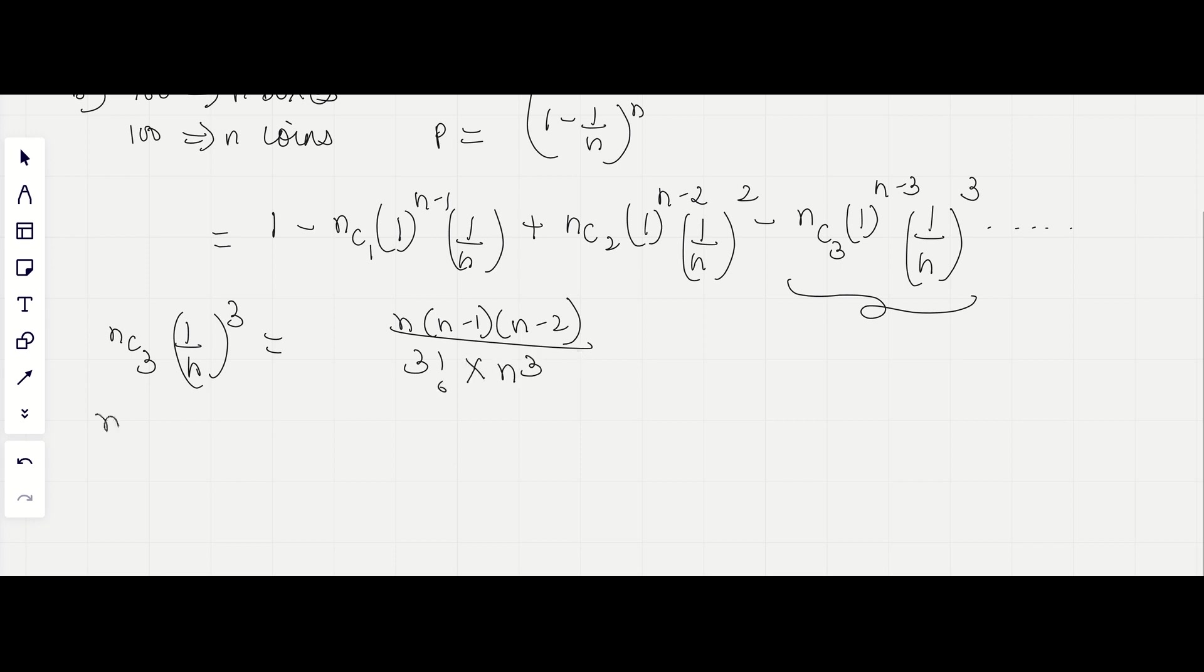Now if N is very large, then this would be equal to 1 upon N cube. So this would be equal to 1 by 3 factorial N, (1 minus 1 by N), (1 minus 2 by N).